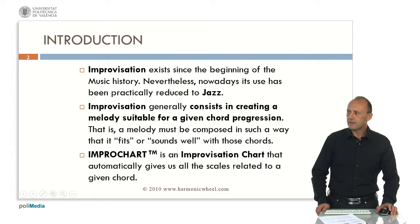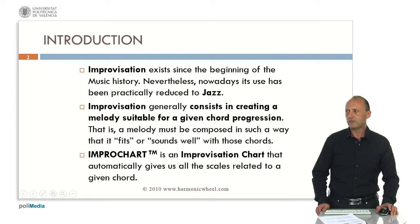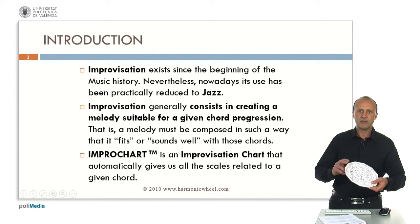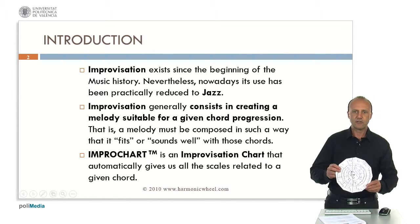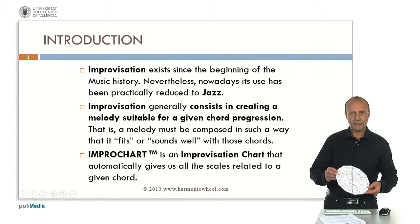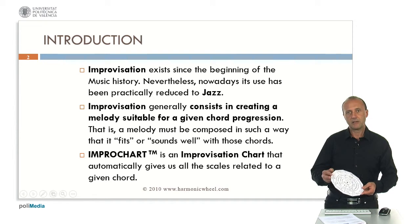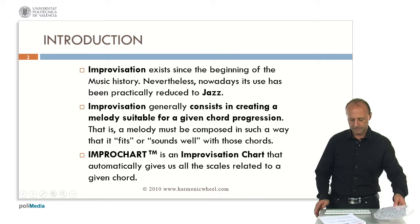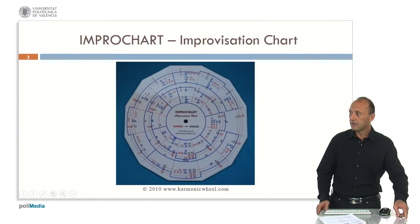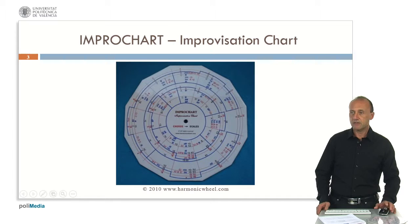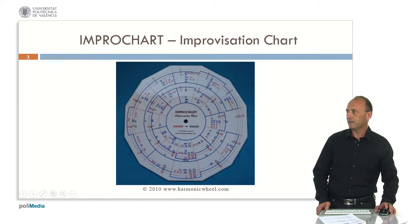Improchart is an improvisation chart that automatically gives us all the scales related to a given chord. This is the Improchart. It consists of two rotating discs, one being cardboard and the other plastic. This is a picture of Improchart.